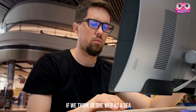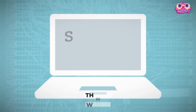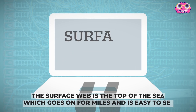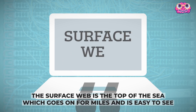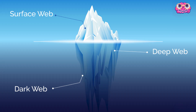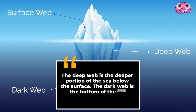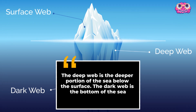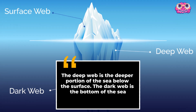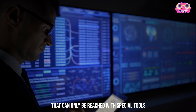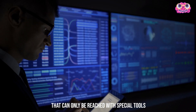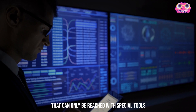If we think of the web as a sea, the surface web is the top of the sea, which goes on for miles and is easy to see. The deep web is the deeper portion of the sea below the surface, and the dark web is the bottom of the sea that can only be reached with special tools.